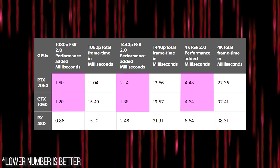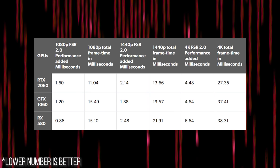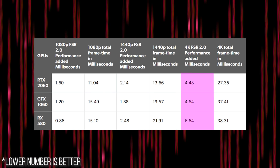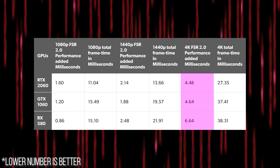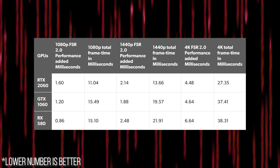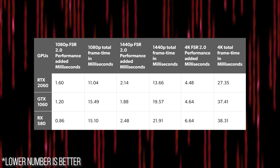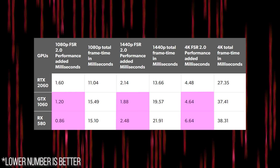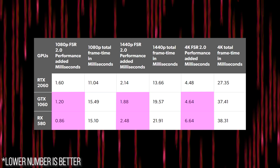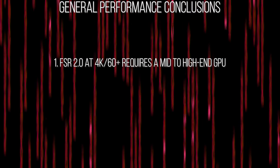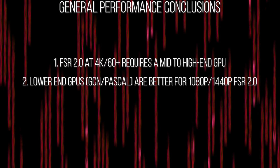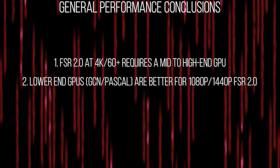Just like with the 2060, we also see that the RX 580 and GTX 1060 add a lot of GPU time at 4K when using FSR 2.0, so it's not very useful for a 60fps target on those GPUs at that output resolution. Much like Ampere versus RDNA 2, Pascal manages to run FSR 2.0 in performance mode faster than the GCN chip, except at 1080p where the RX 580 executed FSR 2.0 in less time. Based upon this performance testing, there are some trends. FSR 2.0 at 4K is quick on big GPUs and slow on smaller GPUs, and lower-end GPUs will find FSR 2.0 most usable at 1440p and 1080p.